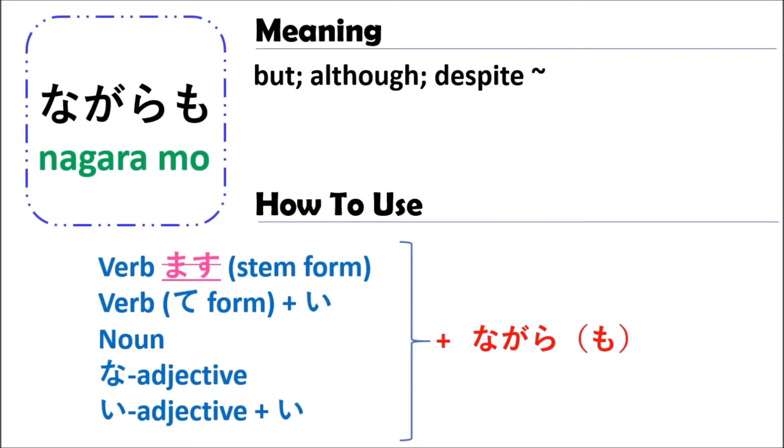For verbs, you can use nagaramo with the stem form or the te-form. For the stem form, you change your verb to the masu-form and then cut out the masu. After that, you follow it by nagaramo. For the te-form, you change your verb to the te-form.